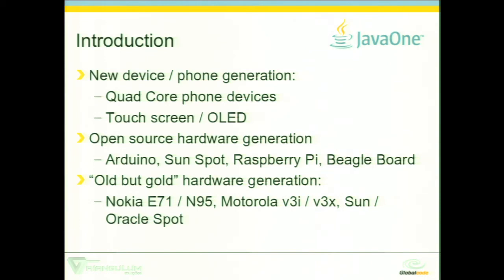On the other hand, we also have open source hardware that is growing very fast, especially here in the US. We see companies like SparkFun selling a lot of stuff for developers who want to do projects by themselves. And we have Arduino. Sunspot was already one of the first famous open source hardware running Java. Raspberry Pi, and I just bought this week Electric Imp — it's an ARM Cortex M3, wireless, inside an SD card, and it costs $30.